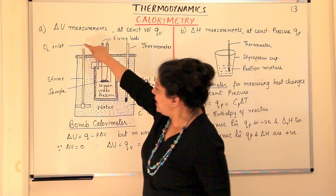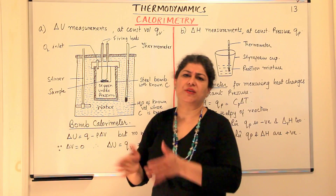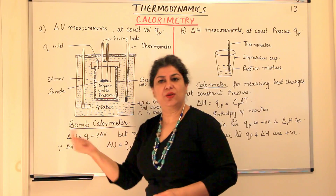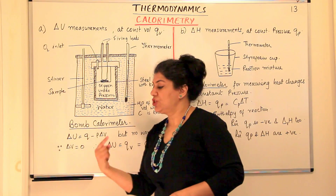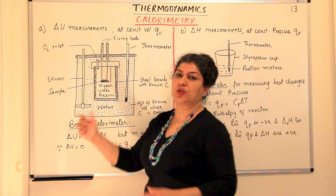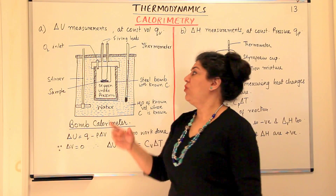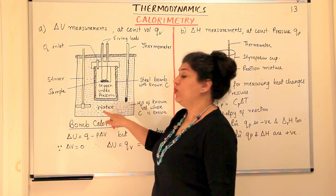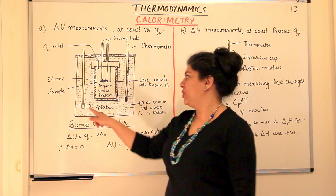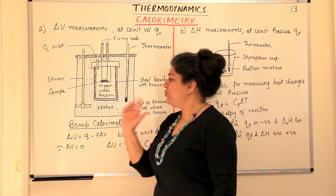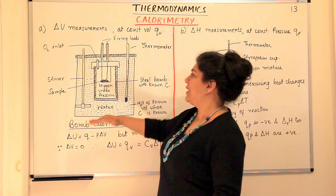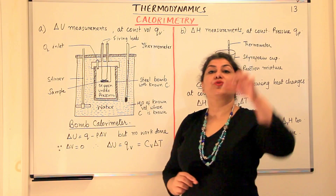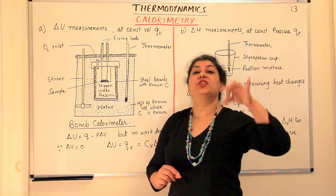Inside the water there is a stirrer — a churner that keeps the water moving, like a slowly rotating fan. It is not too fast, because excessive mechanical work would raise the water temperature on its own. We just want a gentle movement so that the distribution of heat is uniform. A thermometer is present to take the reading of the temperature change.